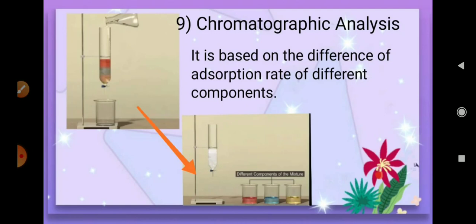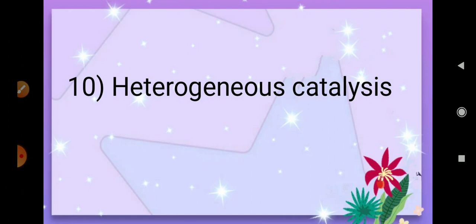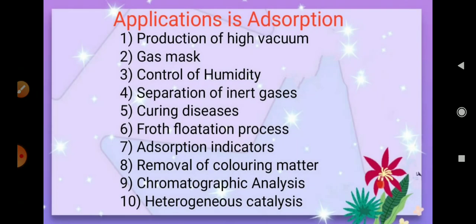The principle of chromatographic analysis is based on the difference in the rate of adsorption by each component, so the adsorption process is applicable here as well. The last application is heterogeneous catalysis — increasing the rate of reaction by using a catalyst, a phenomenon called catalysis. Details of heterogeneous catalysis will be discussed in the next portion of this chapter.